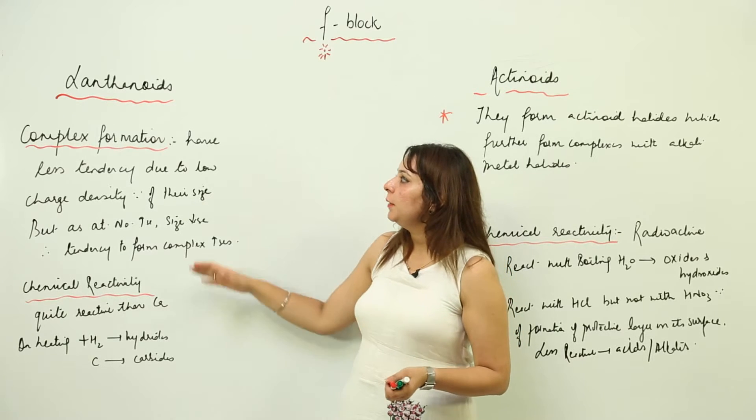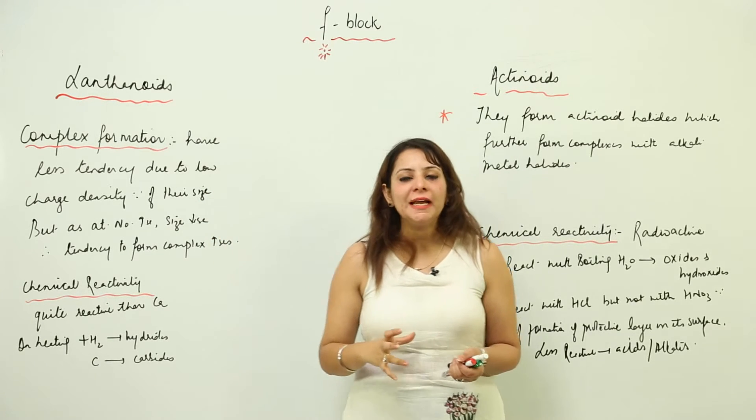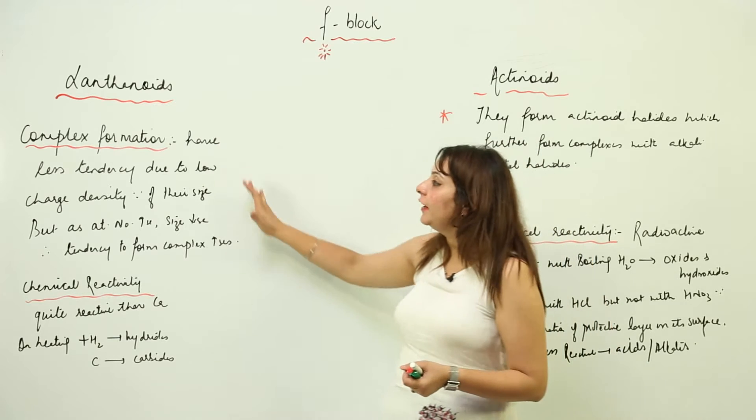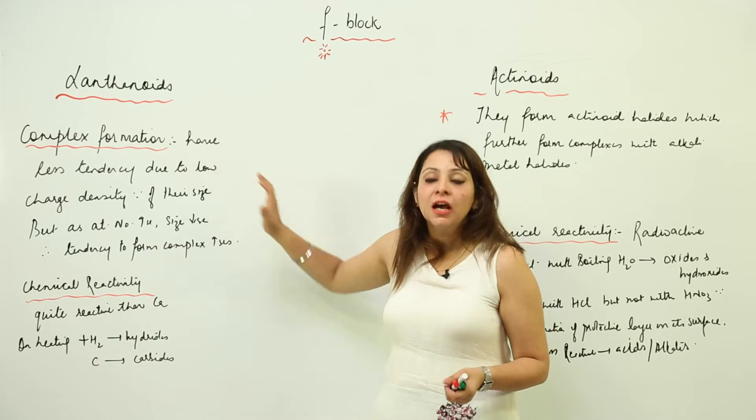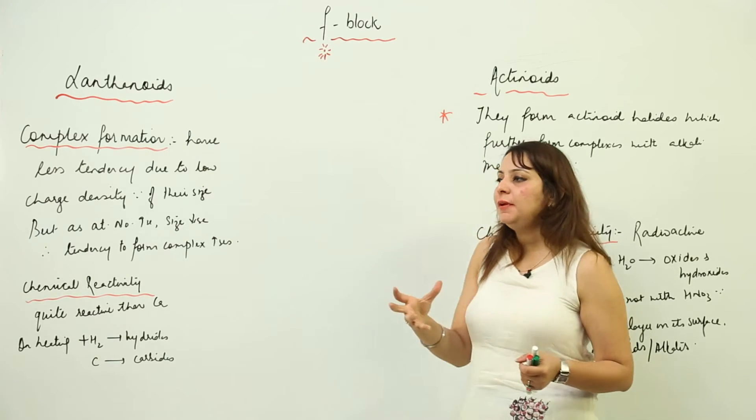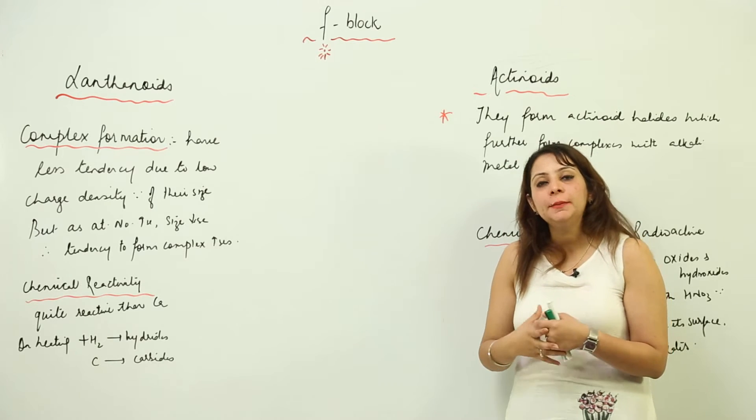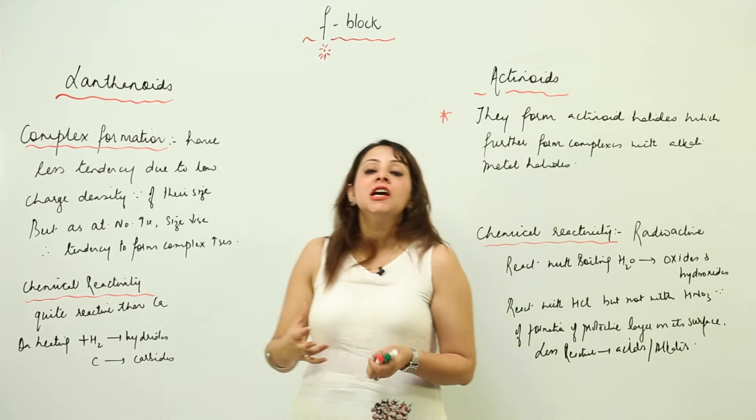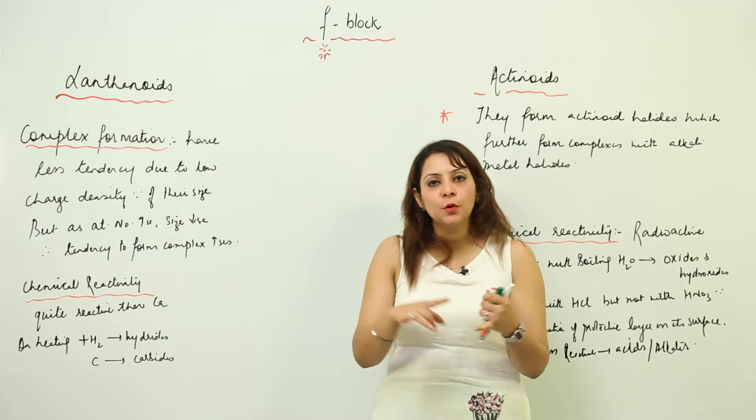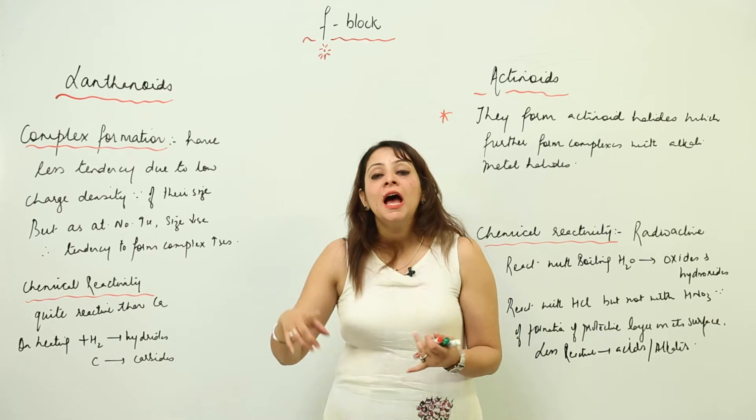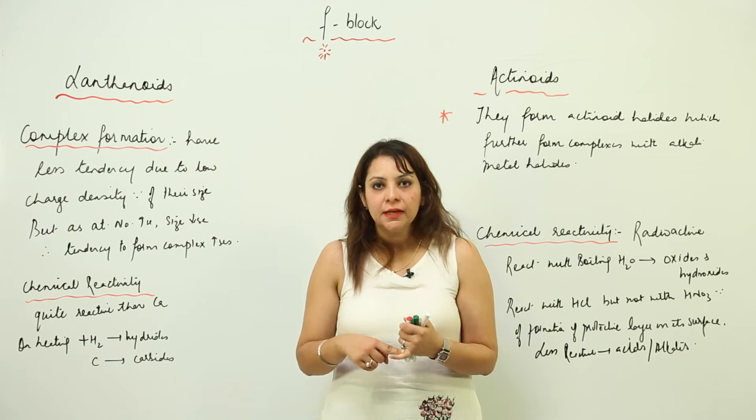If we talk about the tendency to form complexes, lanthanides actually have very low tendency to form complexes. As we all know, if an element needs to form a complex, the factor that is responsible is small size, vacant orbitals, and moreover high charge density.